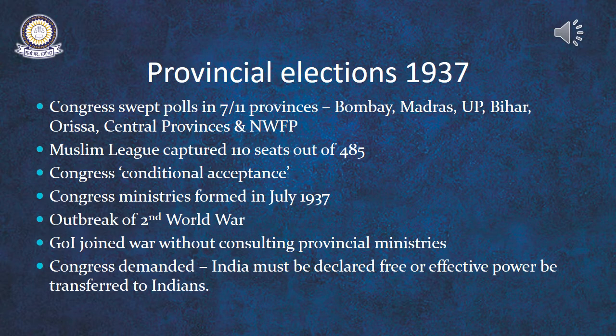Not only Congress participated in the 1937 election — the Muslim League also contested elections to various legislative bodies, but its achievement was moderate. Out of the 485 reserved Muslim seats, the League could capture only 110 seats. Even in the Muslim majority provinces of Punjab, the Northwest Frontier Province, Bengal, and Sindh, the League was defeated by rival Muslim parties.